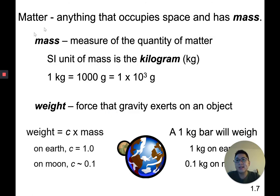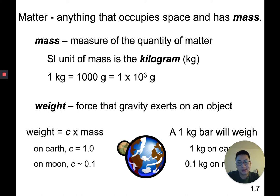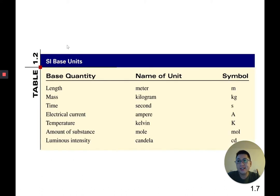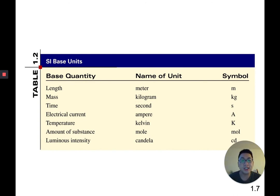Mass is one of our SI units. SI stands for Système International — the International System of Units, also known as the metric system. There are seven different SI base units. Length is measured in meters, symbol lowercase m. Mass is measured in kilograms, symbol kg. Time is measured in seconds. Electric current is measured in amperes.